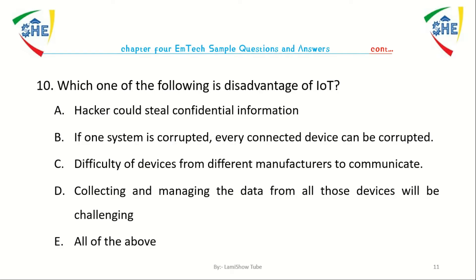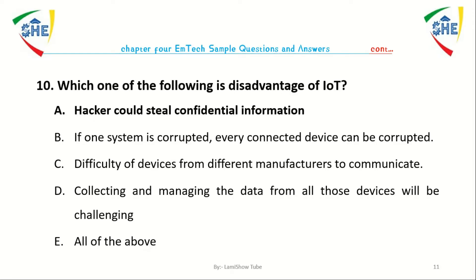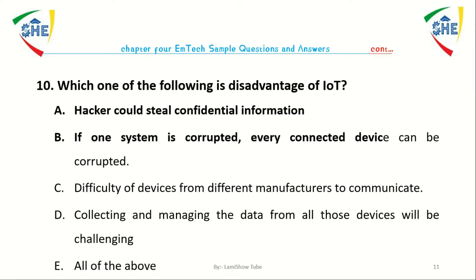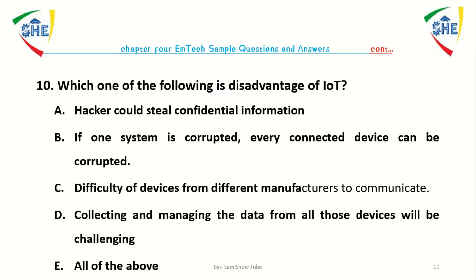Question number ten: Which one of the following is a disadvantage of Internet of Things? A. A hacker could steal confidential information. B. If one of the systems is corrupted, every other connected device can be corrupted. C. Difficulty of devices from different manufacturers to communicate. D. Collecting and managing data from all those devices will be challenging. E. All of the above.